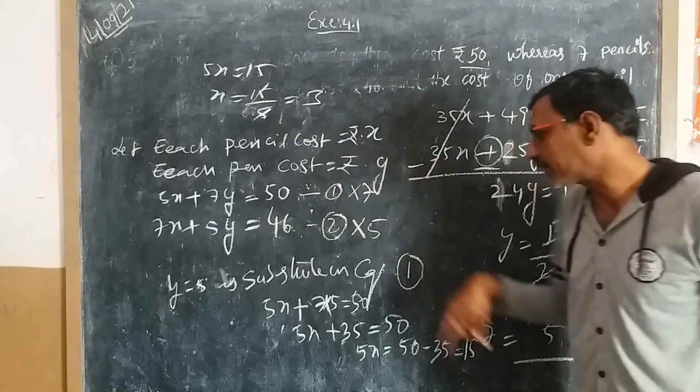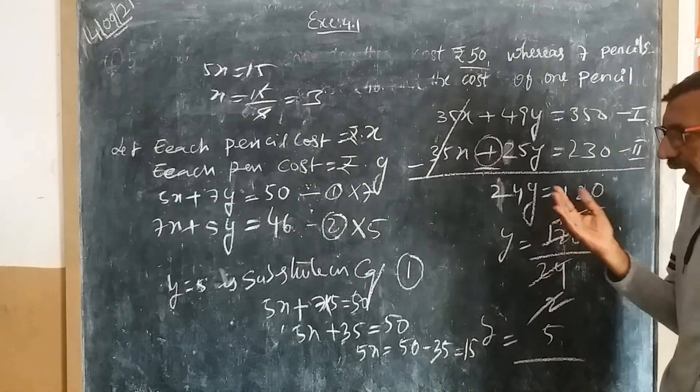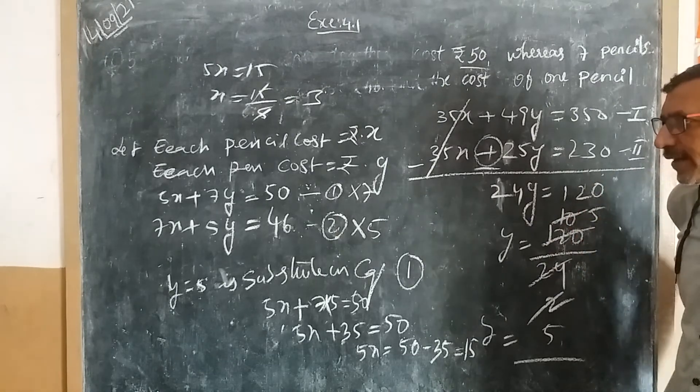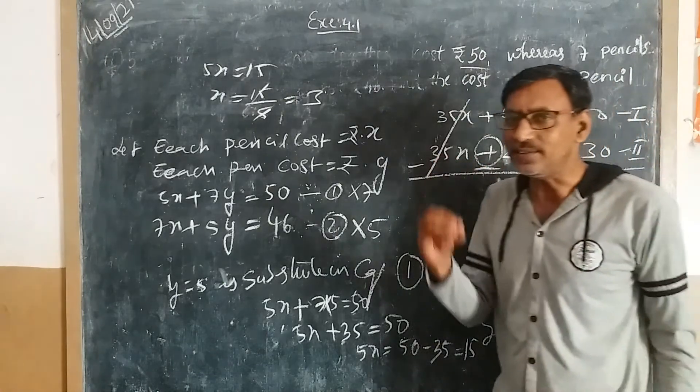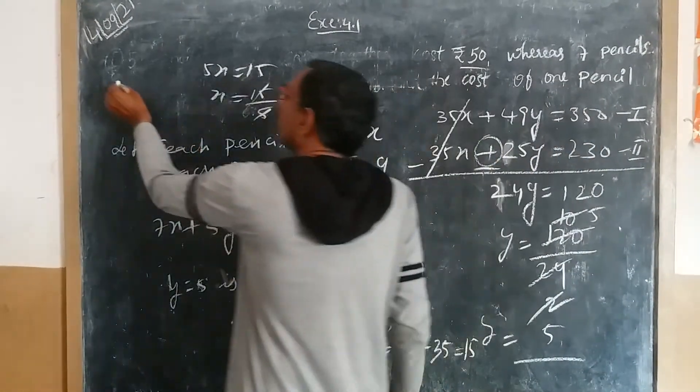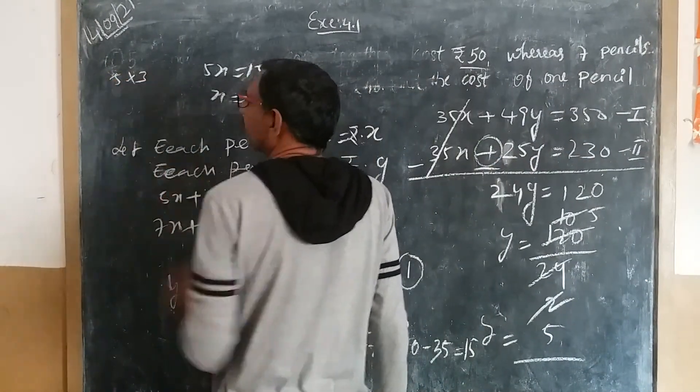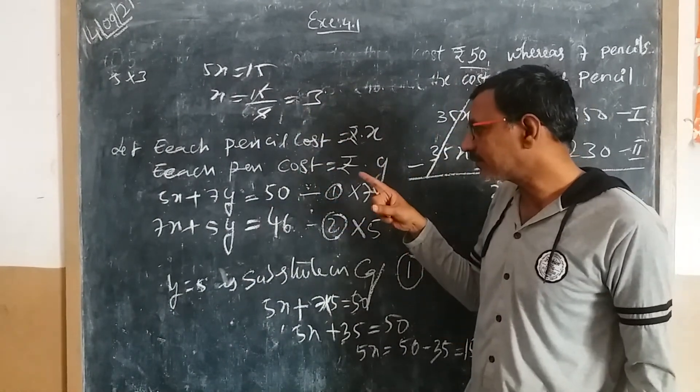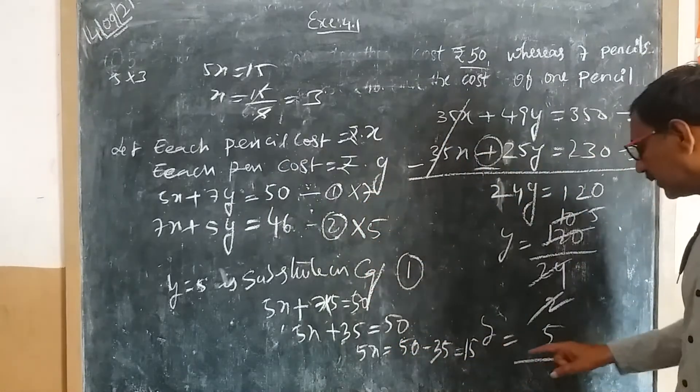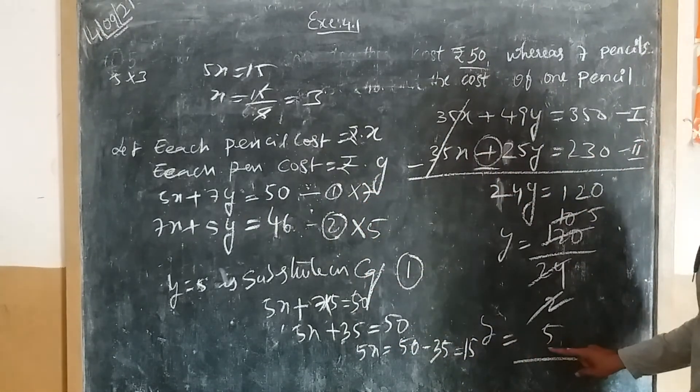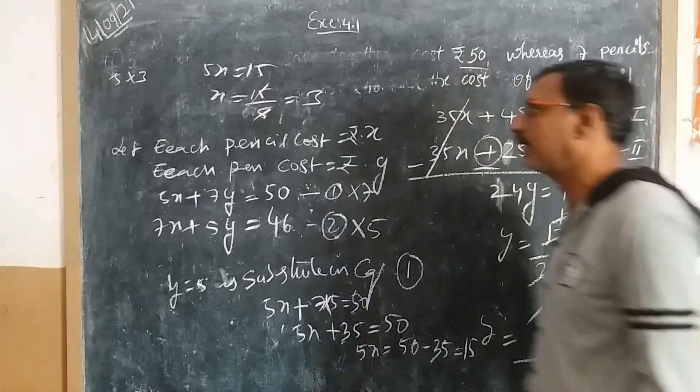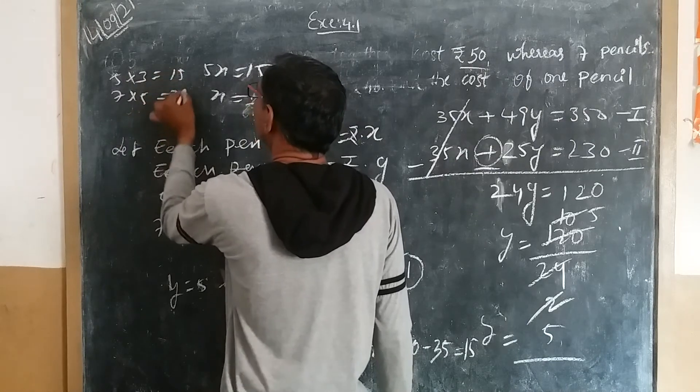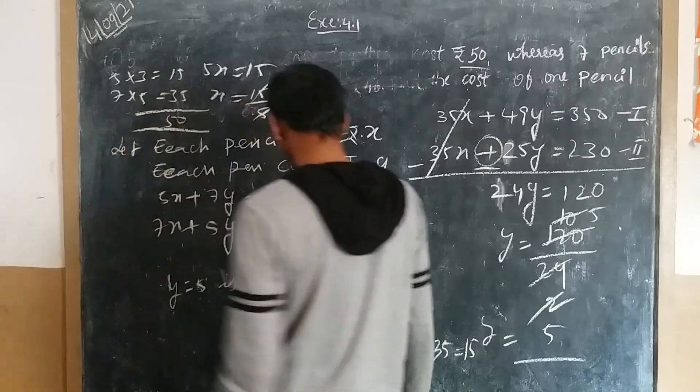Each pen costs 5 rupees. Let me verify from the data. The first statement: 5 pencils at 3 rupees each is 15, and 7 pens at 5 rupees each is 35. 15 plus 35 equals 50. Correct.